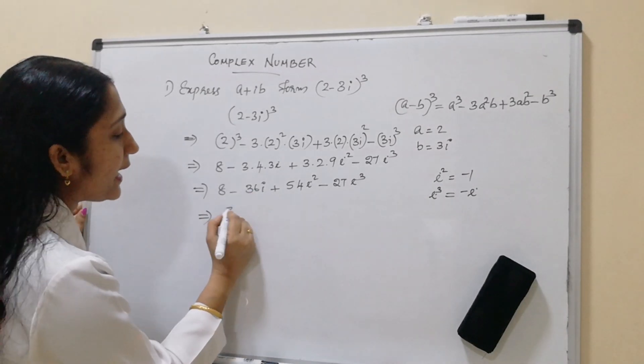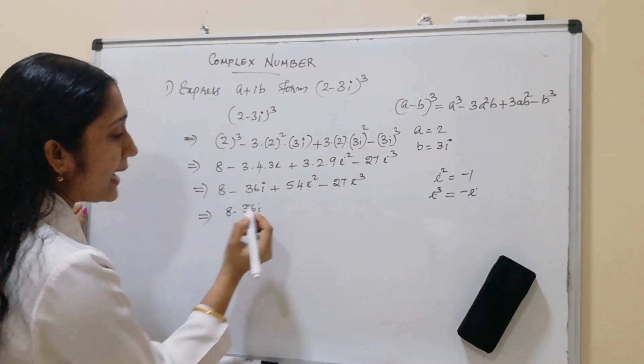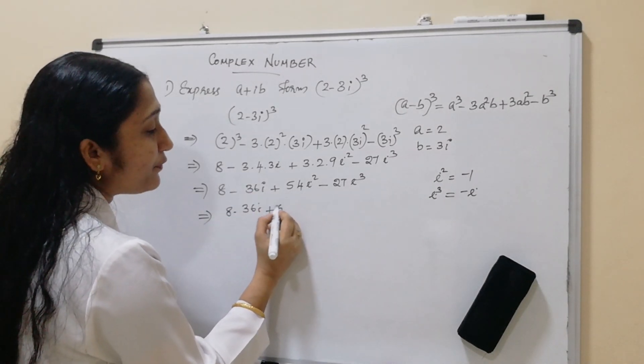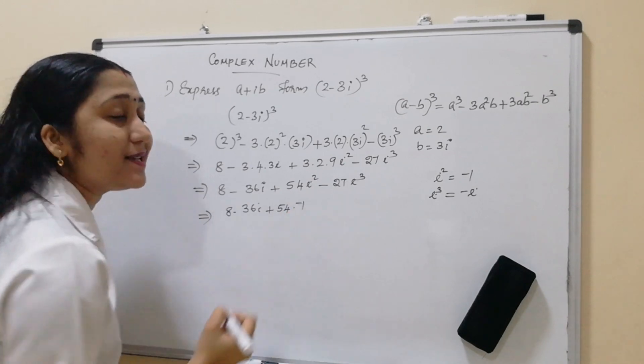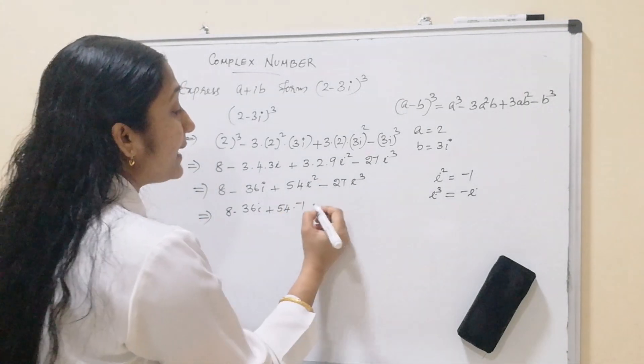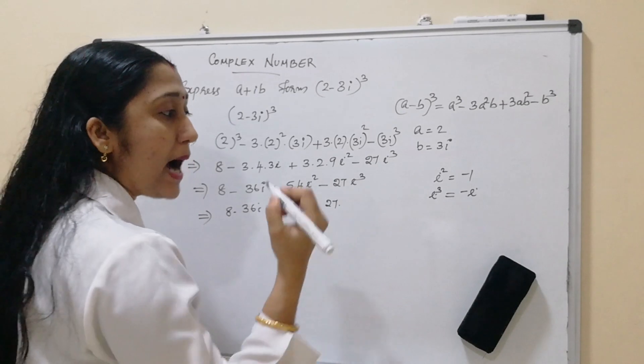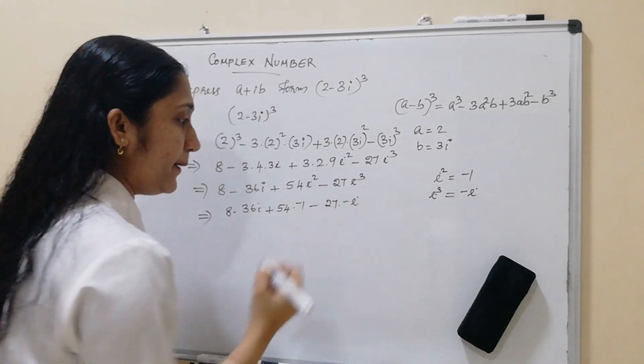That implies here, 8 minus 36i plus 54 into minus 1, i square is minus 1. Next, minus 27 into i cube means minus i. Okay.